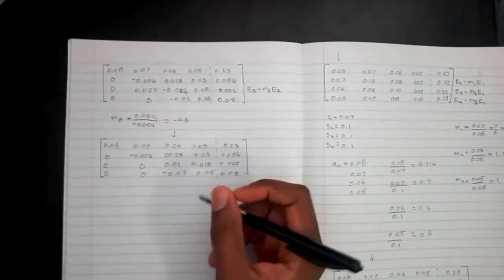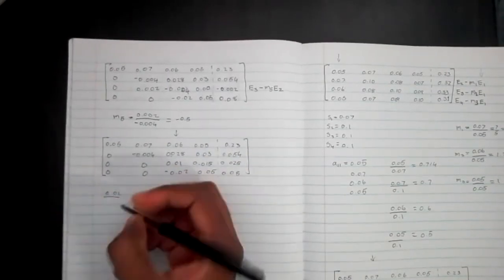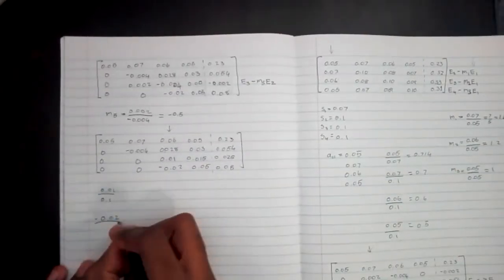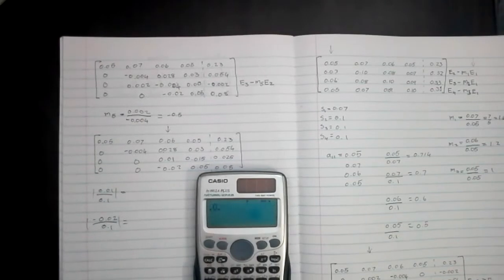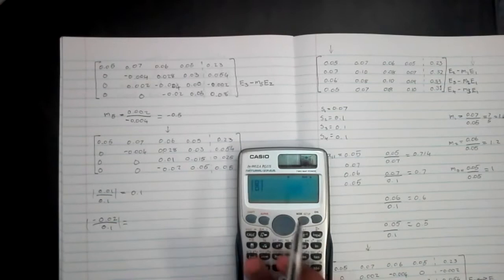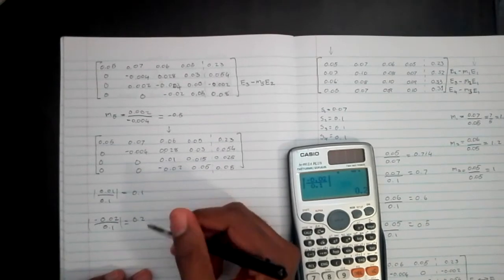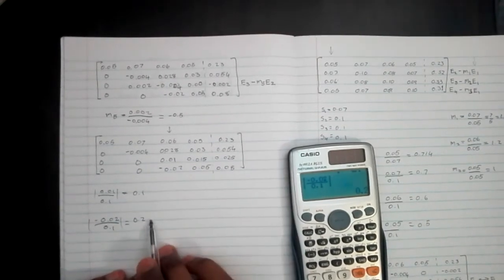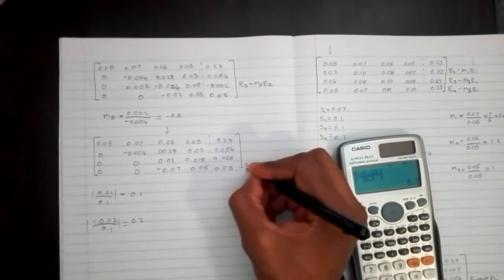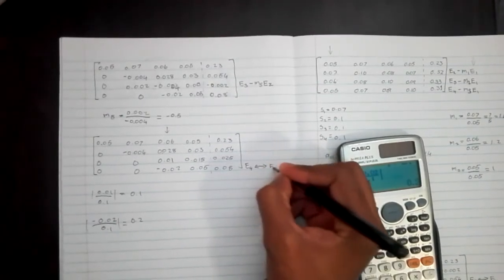What we need to do again is find that scaled value. Our last row is larger than the third row, so we're going to swap these two — E4 and E3 get interchanged.